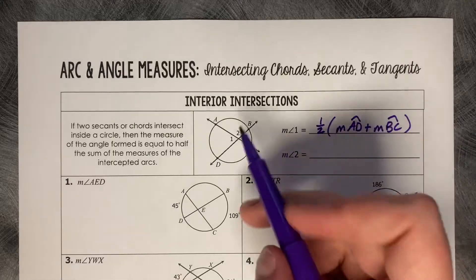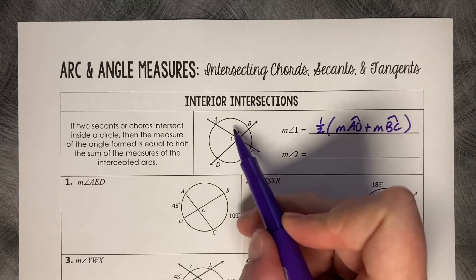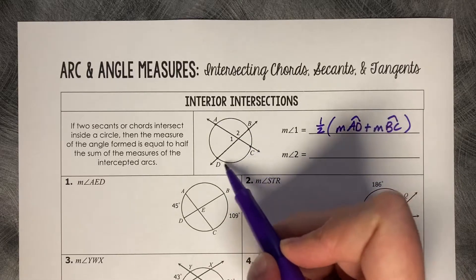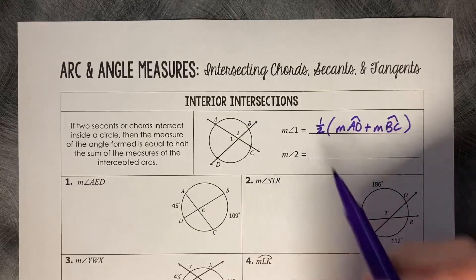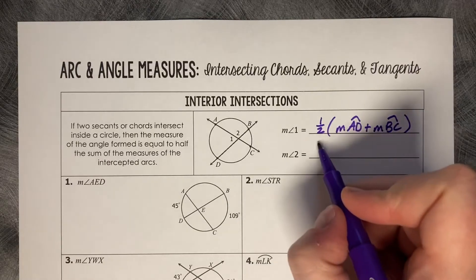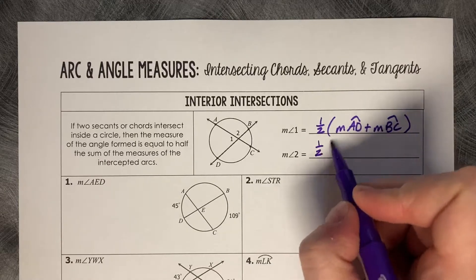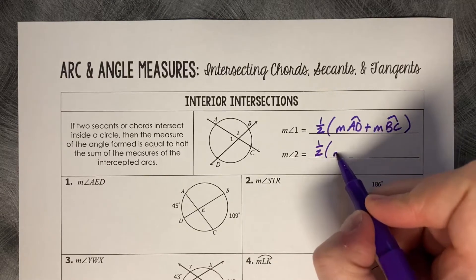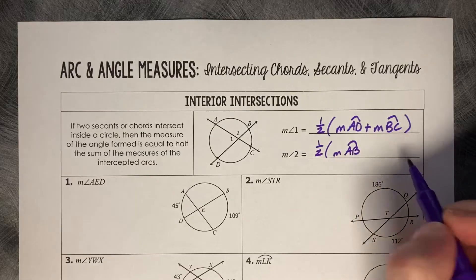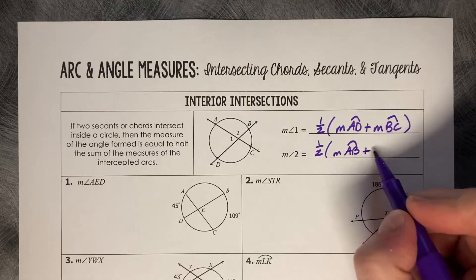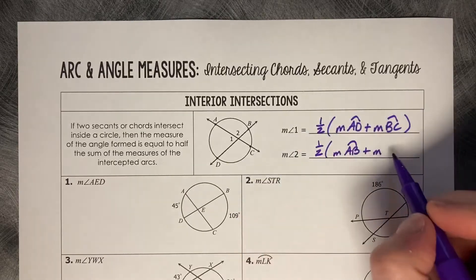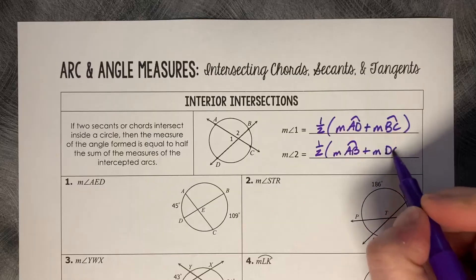Same thing for the measure of angle number 2. Arc AB is corresponding and arc DC is corresponding, and it's half of those added together — so half of the measure of arc AB, the top arc, plus the measure of arc DC, which is the bottom arc.